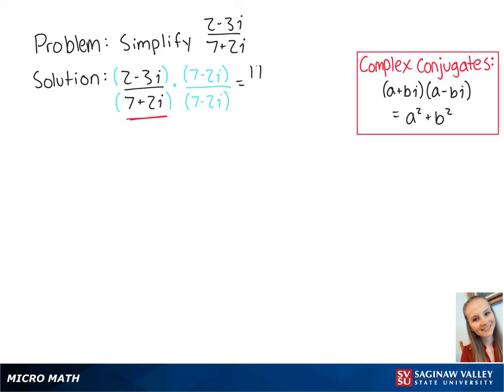which equals 14 minus 4i minus 21i plus 6i squared all over 49 plus 4.